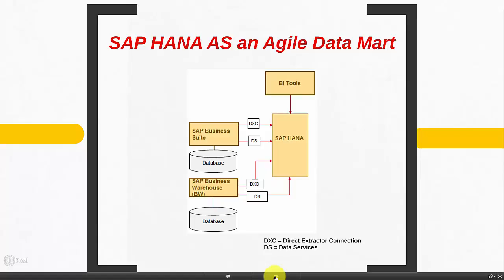In an Agile Data Mart, the data we provision from source systems comes from an application level of a transaction database or a data warehouse. We bring in the semantic knowledge of the source system, which reduces the modeling effort and provides structure in the data. What we see in the slide is that data is gathered from SAP Business Suite — not from the database itself, but at the business suite level where a lot of application semantics have been applied.